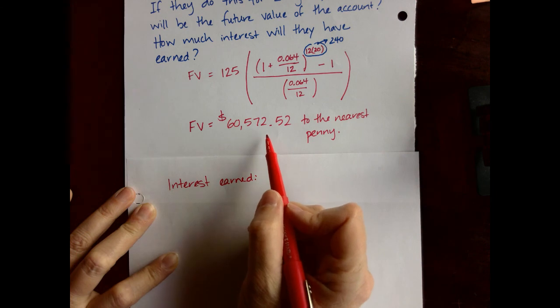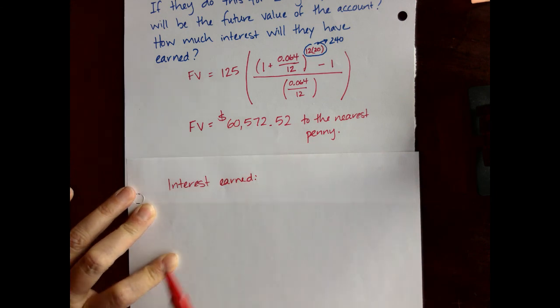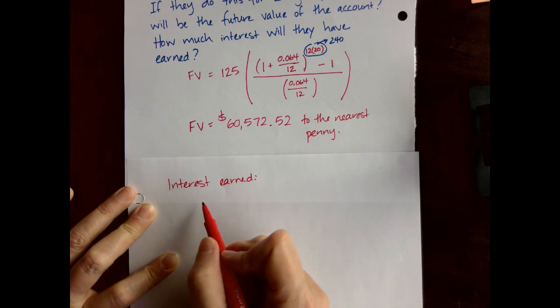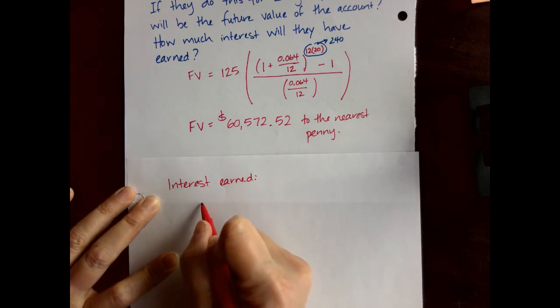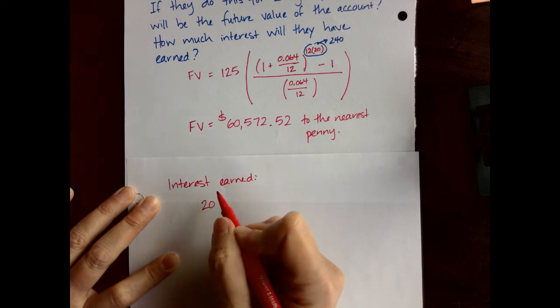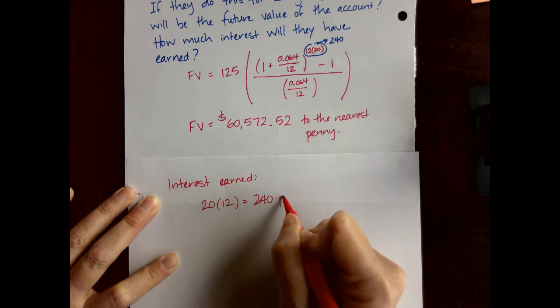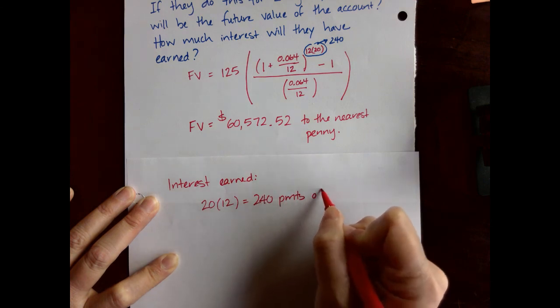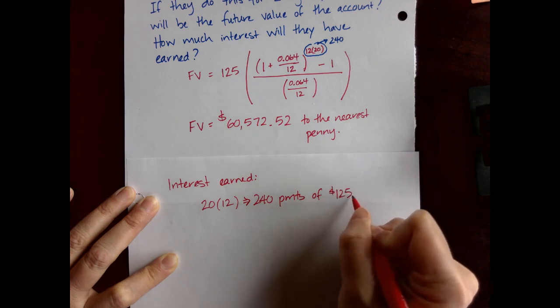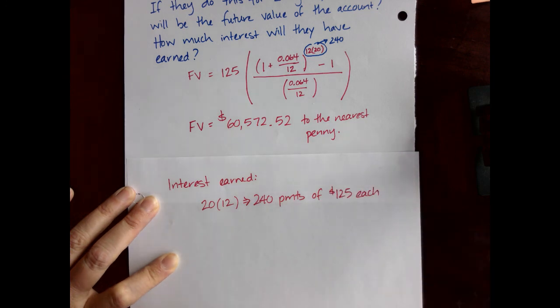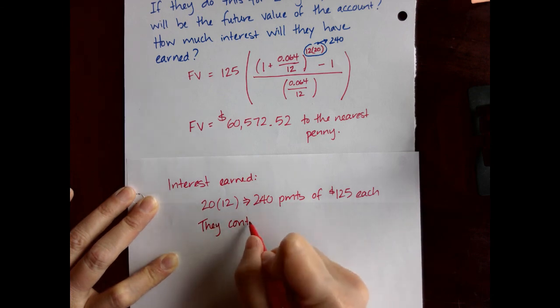Well we know how much they get out at the end pretending like taxes and things like that don't exist. But let's find out how much they put in. They made 20 years worth of payments. So that's 20 years times 12 is 240 payments of $125 each.